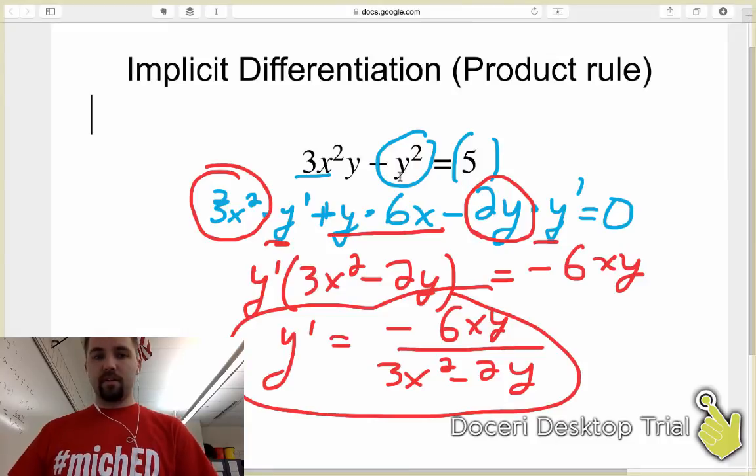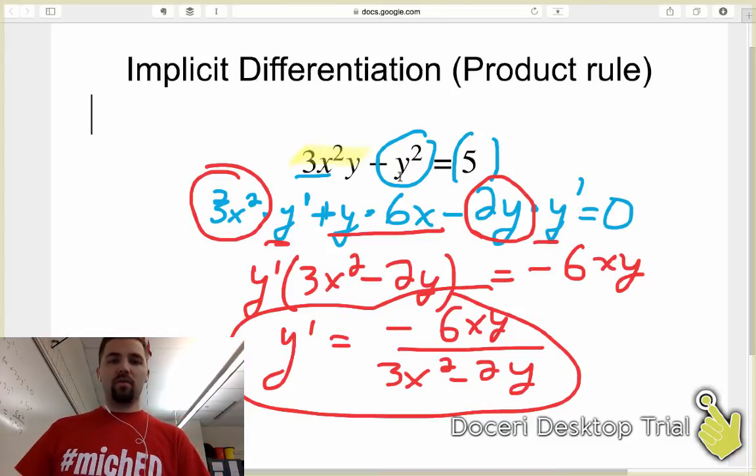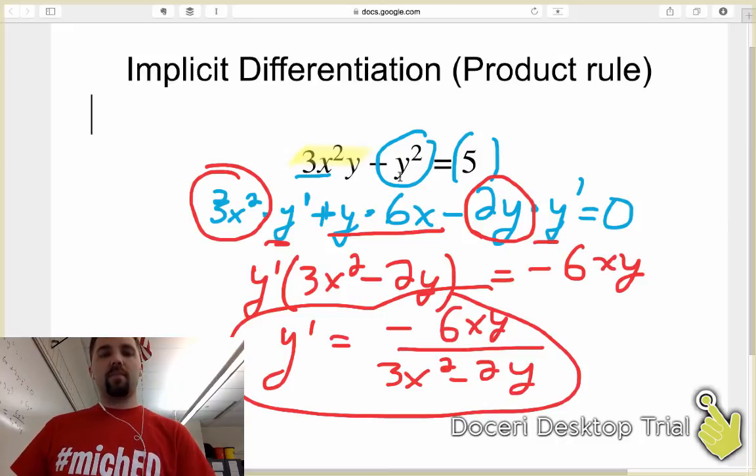And so what you want to be careful of is whenever you have a situation like this, where you have x²y, or x times y, or a product of an x and a y, don't just go 6xy. Make sure that you apply the product rule.